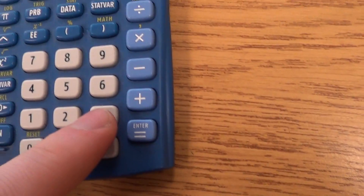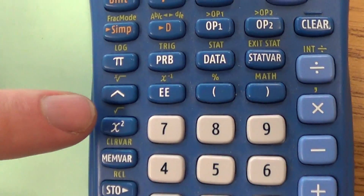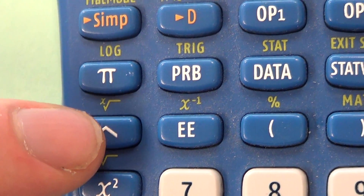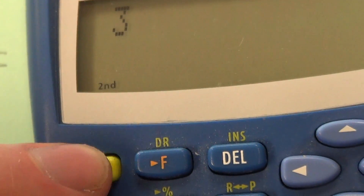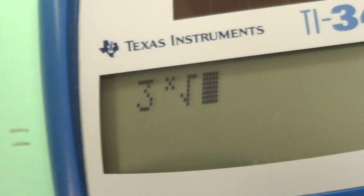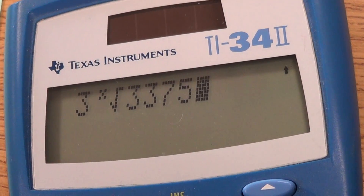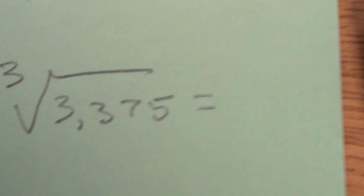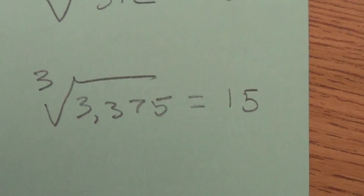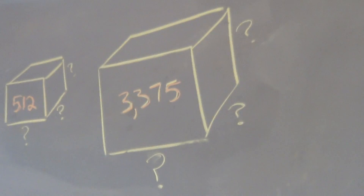I type 3 to tell the calculator I'm about to do a cube root, but the calculator doesn't know what the 3 is for unless I indicate the root. So I use the second feature on the exponent button — I call it the house button. I hit second and then the house button, and on the screen I get 3 and then it says x root. Now it's ready for me to type the number: 3375. I hit enter and it turns out to be 15. So 15 cubed is 3375, meaning the cubed root of 3375 is 15 — the sides of that cube are 15.